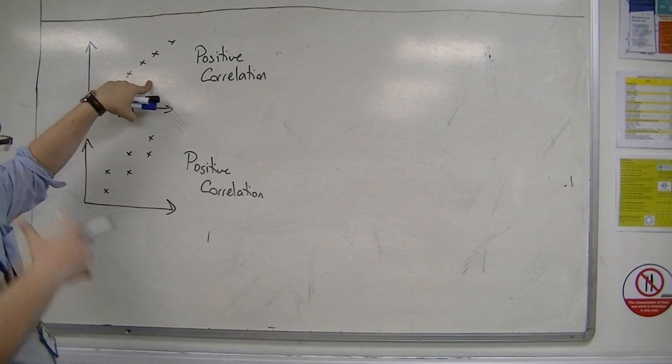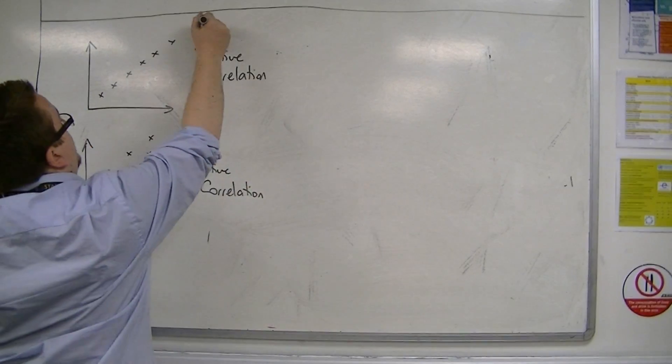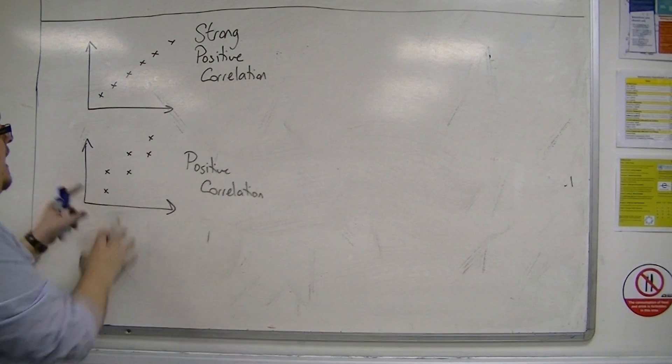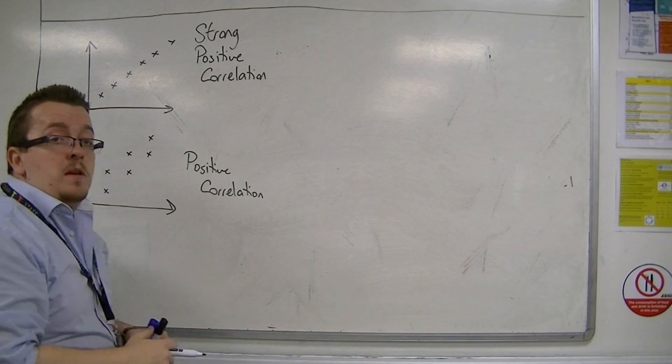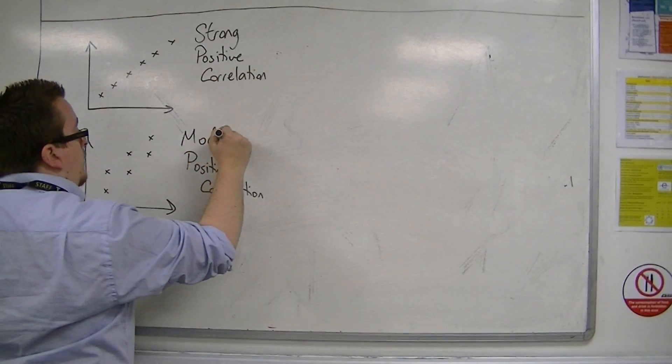So this, because they are closer to being a straight line, would be referred to as strong positive correlation. And this correlation might be considered to be moderate positive correlation to weak.